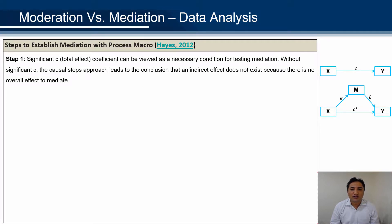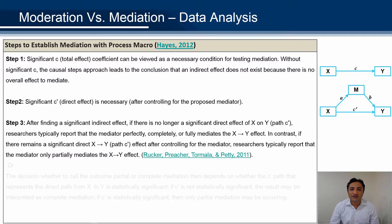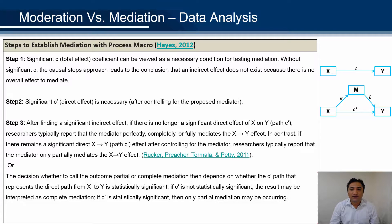Now let's discuss how to establish mediation with the Process macro. In step one, the C path should be significant — that is the path X to Y. After that, C' should be significant, which is the direct effect after controlling for the proposed mediator. After that, the indirect effect should be significant. If there is no direct effect from X to Y, then it is a complete mediation; otherwise, it's a partial mediation. To put it another way: if the indirect effect is significant and the direct effect becomes insignificant, then it's complete mediation; else, it's partial mediation.